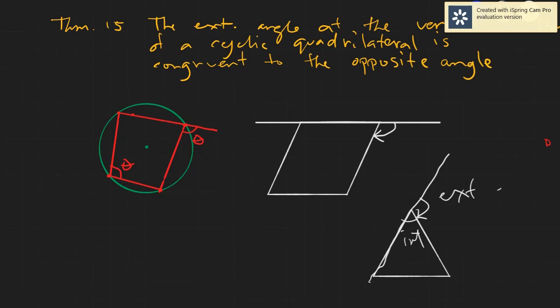So I hope that you follow that. Now let's go back to our figure. The theorem states that if you have an external angle — let's call it beta — if you have this angle beta here as an external angle, it's actually congruent to the opposite angle. The external angle will not exist without an internal angle, and it's always congruent to the opposite internal angle.